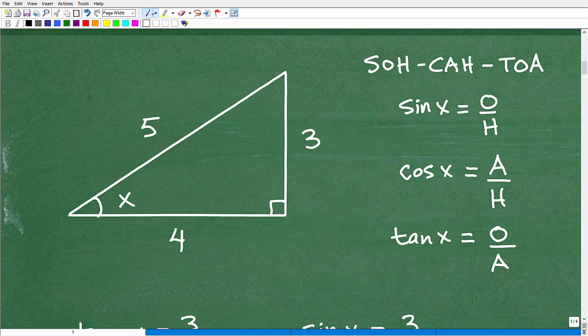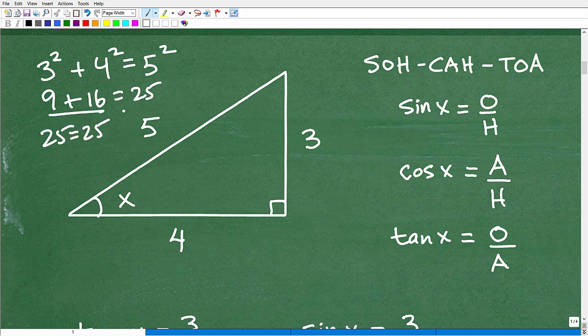Indeed, this is a real deal right triangle because if I use the Pythagorean theorem and I go 3 squared plus 4 squared, that is indeed equal to 5 squared. So this would be 9 plus 16. Is that equal to 25? Yes, 9 plus 16, 25 is equal to 25. This is, in fact, an actual right triangle.